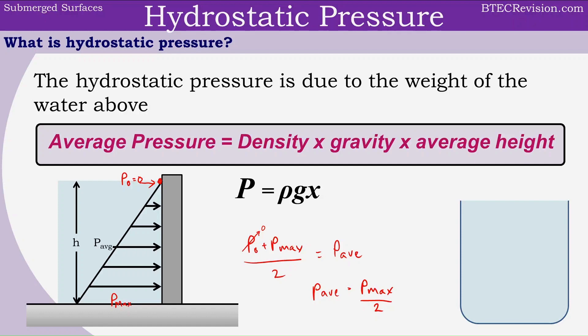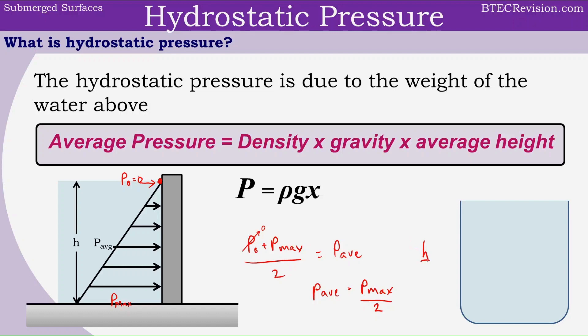Since gravity and density are constant, the only variable that changes is the height. So the height for average pressure is going to be h over 2, and we can label this as x. Therefore, the equation becomes: average pressure equals density times gravity times the average height, which we'll label as x.